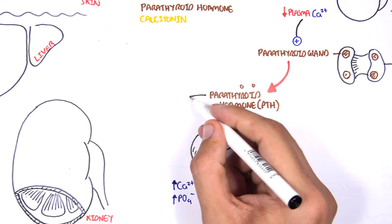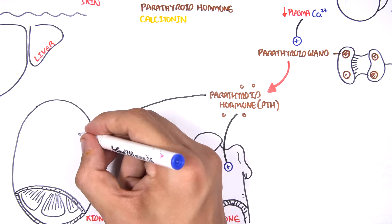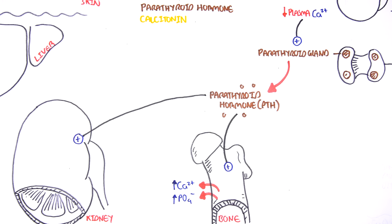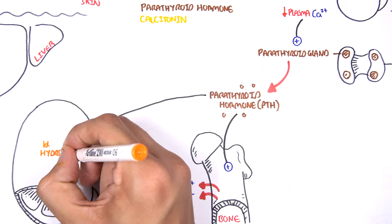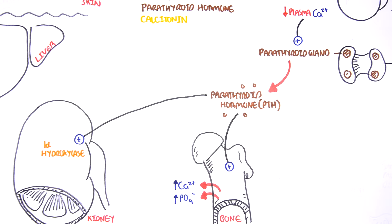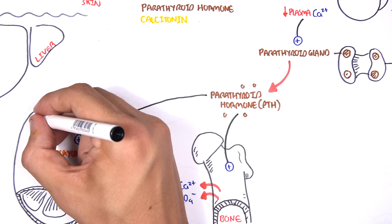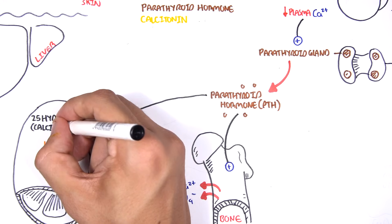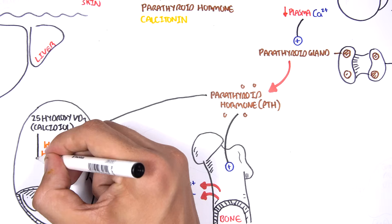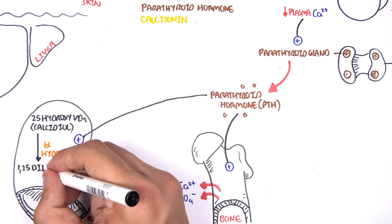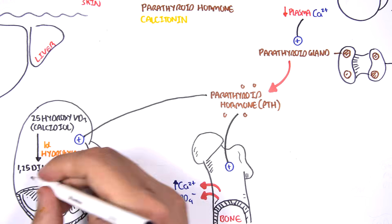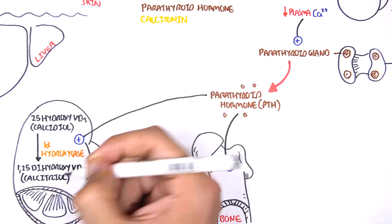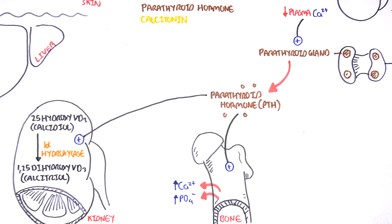Parathyroid hormone also targets the kidneys, specifically an enzyme called 1-alpha-hydroxylase, whose main function is to activate vitamin D. It converts 25-hydroxyvitamin D3 — also known as calcidiol — to 1,25-dihydroxyvitamin D3, which is calcitriol. Calcitriol is the active form of vitamin D.